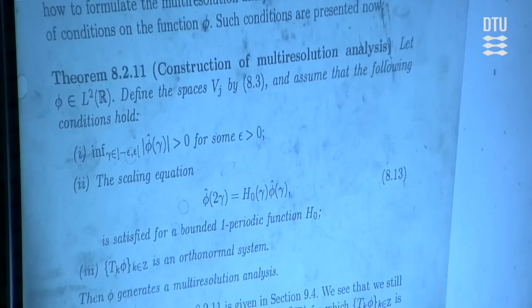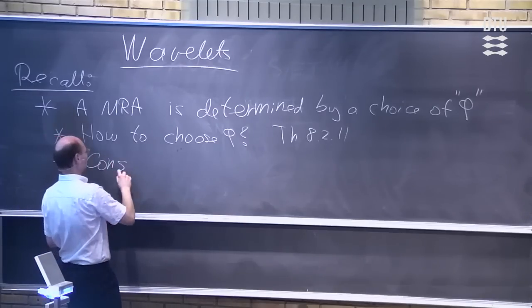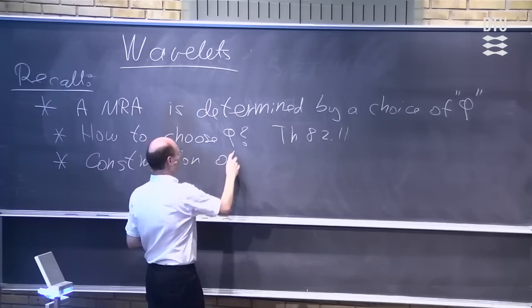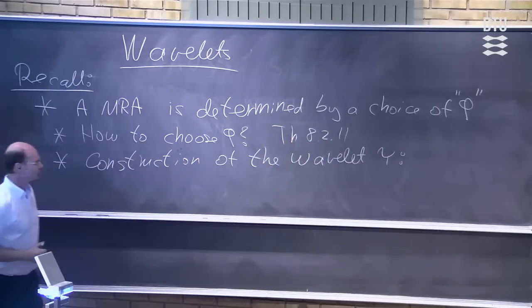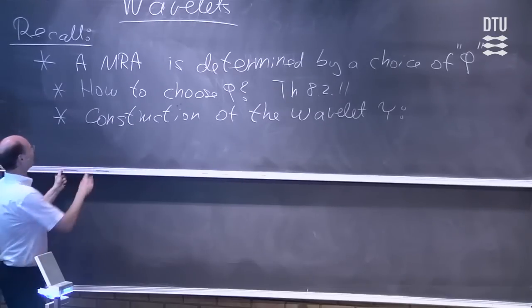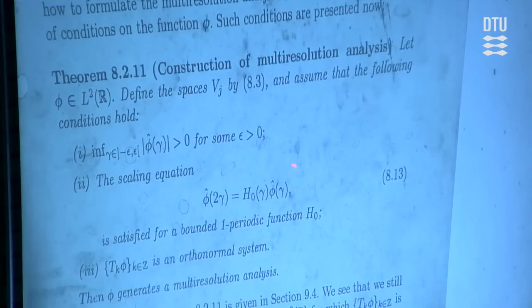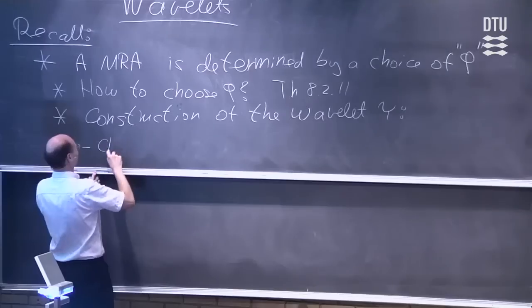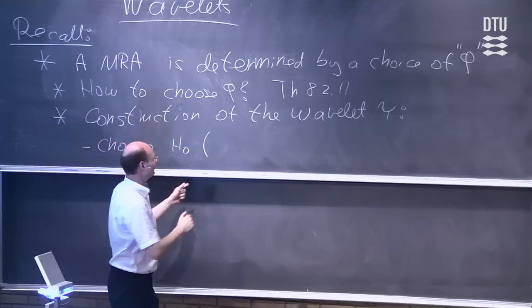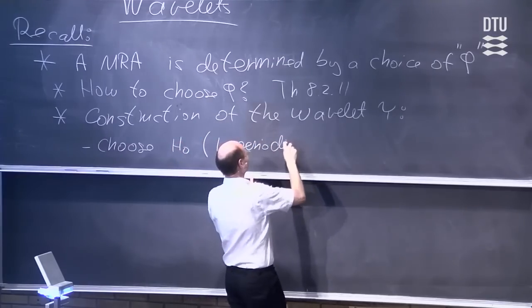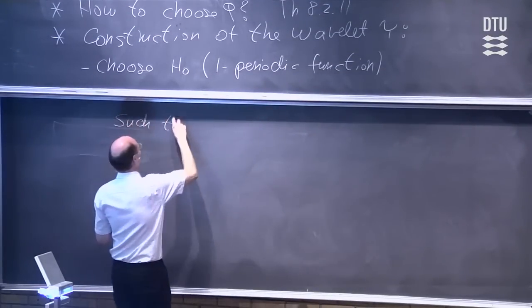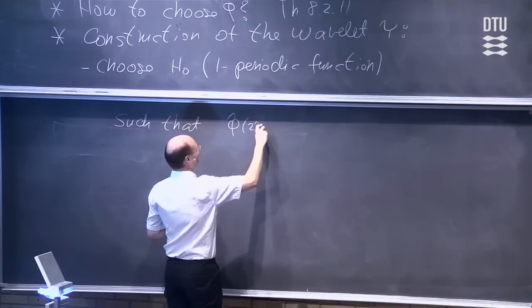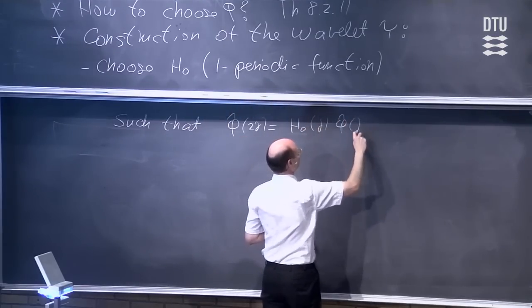Looking at this theorem, we find out how to choose this function. As soon as we have phi, we know how to construct our wavelet. There are a couple of steps. One of them is that we choose the function h0 that satisfies the scaling equation — and importantly, this should be a one-periodic function. We choose it such that the Fourier transform of phi at two gamma equals h0 of gamma times phi-hat of gamma.